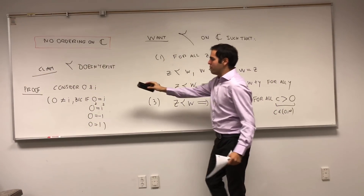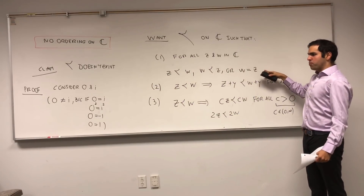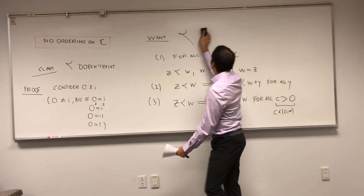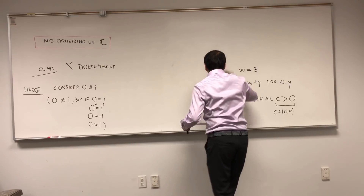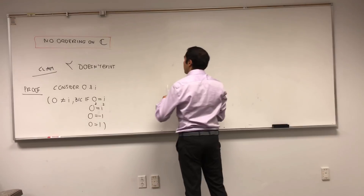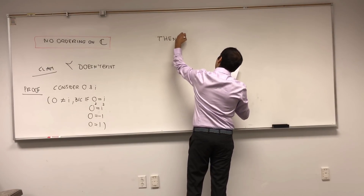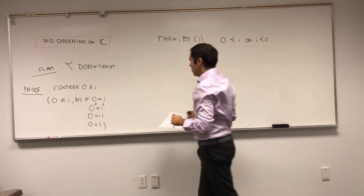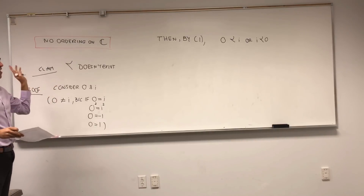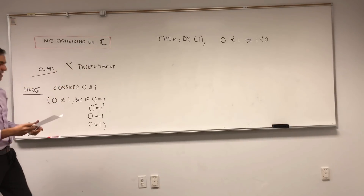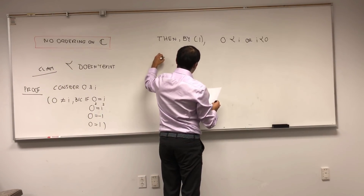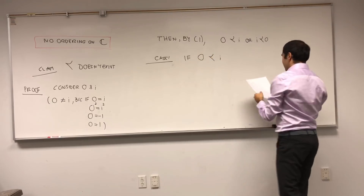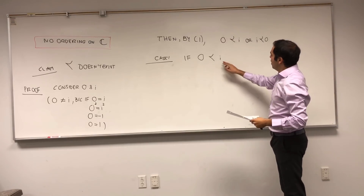So, consider those two different numbers 0 and i. By the first property — trichotomy — since they're not equal, it can only happen that either 0 is less than i, or i is less than 0. Let's do it by cases. Case 1: suppose 0 is less than i.